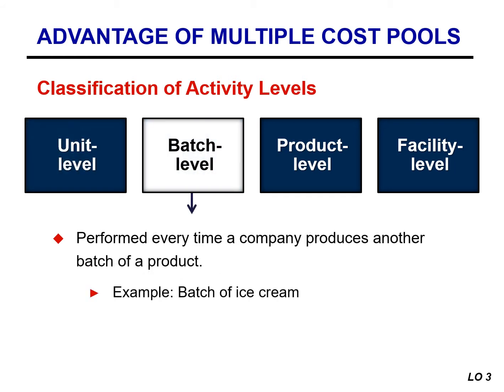Batch level activities are performed every time a company produces a batch of a product. For example, an ice cream producer needs to set up its machines every time it produces a batch of ice cream. The amount of time spent setting up machines increases with the number of batches produced, not with the number of units produced.